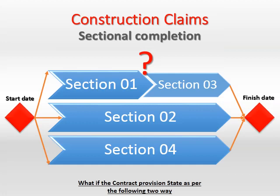If section one is not finished by the completion date, that may be because the contractor has been inefficient, or because events have occurred which entitle the contractor to an extension of time.